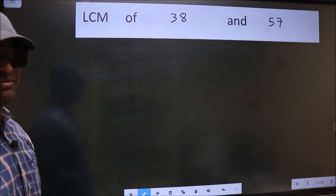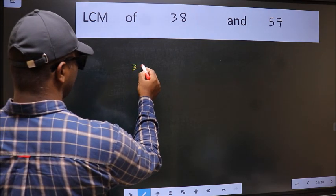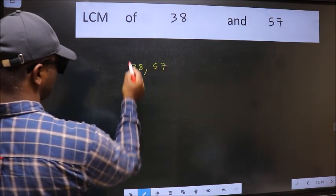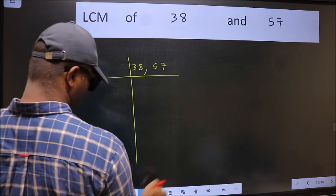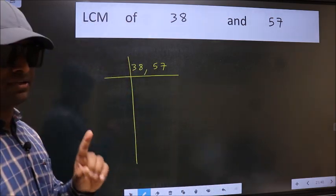for that we should frame it in this way: 38, 57. This is your step 1.